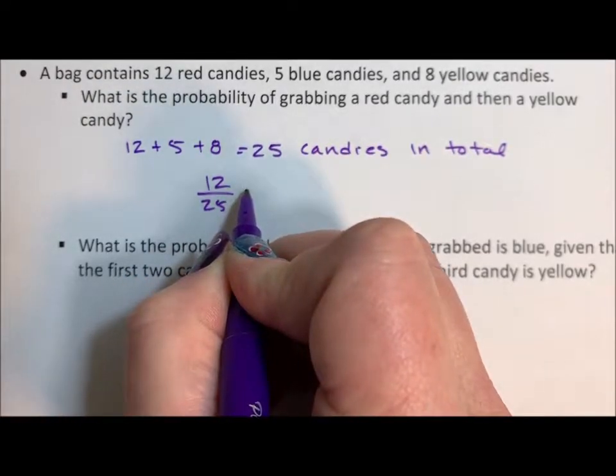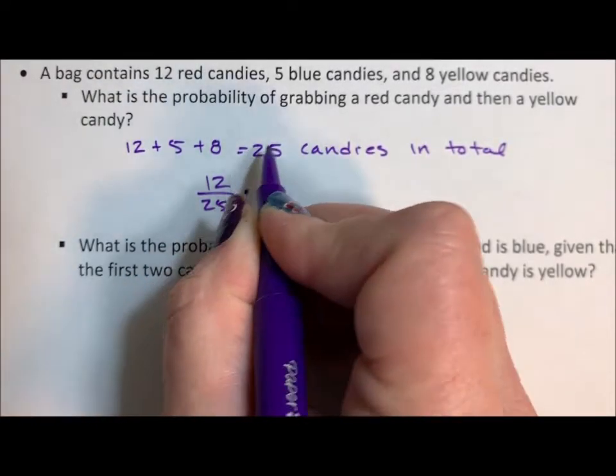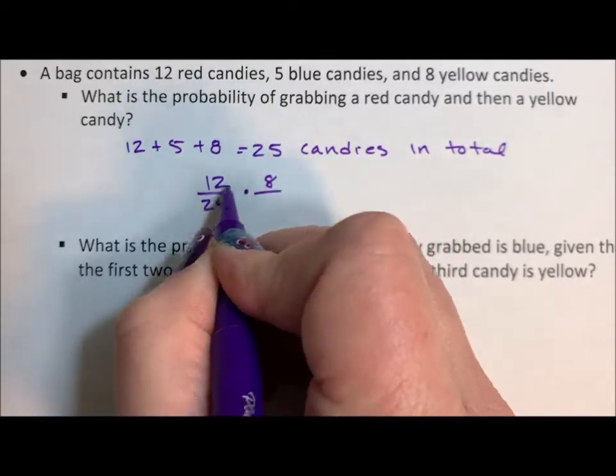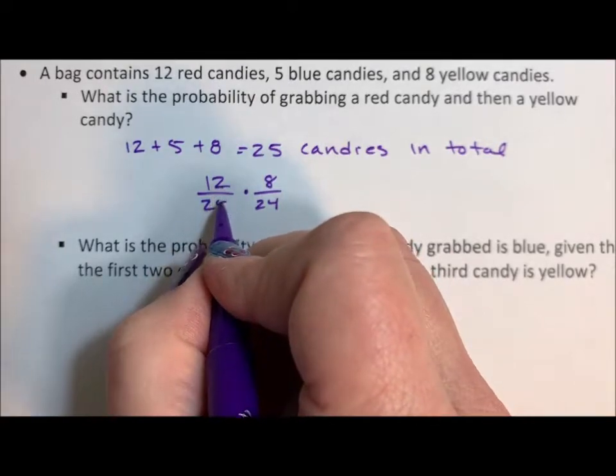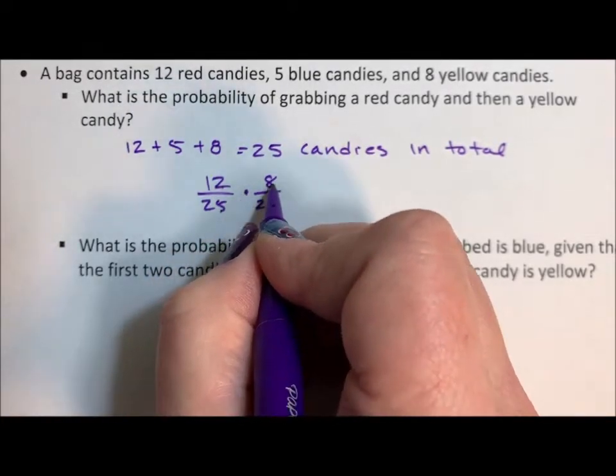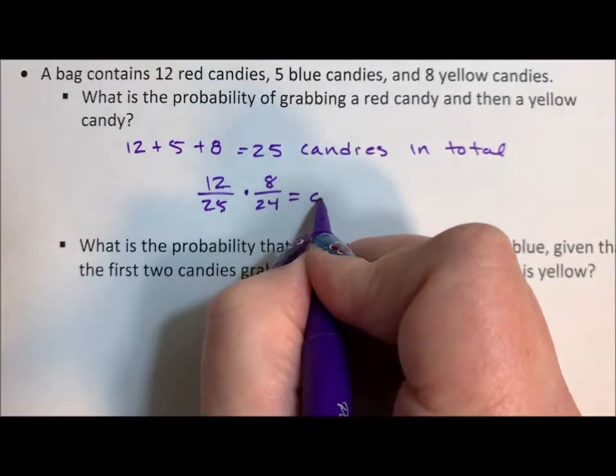And then for the yellow, there are 8 yellows, but we've taken one out, so now there's only 24 left. So 12 divided by 25 times 8 divided by 24 is 0.16.